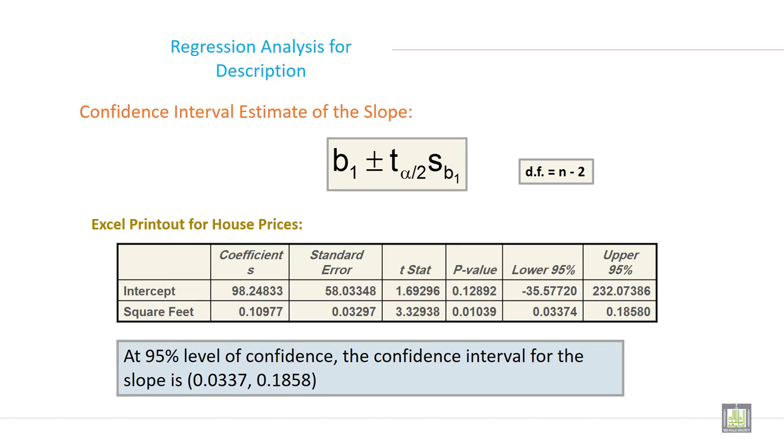Confidence interval estimate of the slope is b1 plus minus t alpha by 2 times s b1, with degree of freedom n minus 2. Excel printout for house prices shows the intercept and square feet, standard error, t statistics, p value, and confidence interval lower and upper limits.